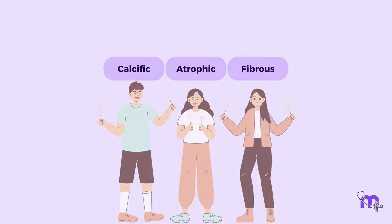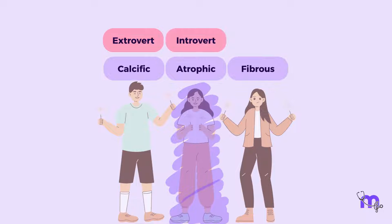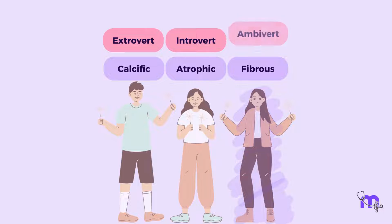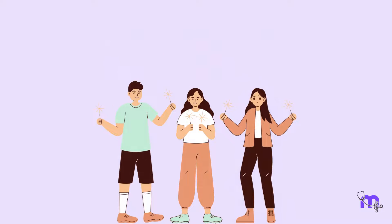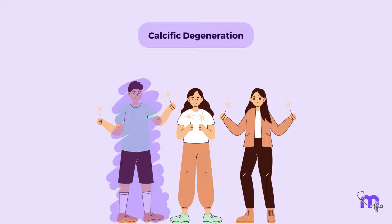Calcific is the extrovert because its clinical findings are clearly observed radiographically. On the other hand, atrophic is considered to be an introvert that doesn't publicly flaunt its clinical findings. And finally, the fibrous type is more of an ambivert that may or may not show its true colours. Let's discuss these siblings, beginning with the extroverted calcific degeneration.